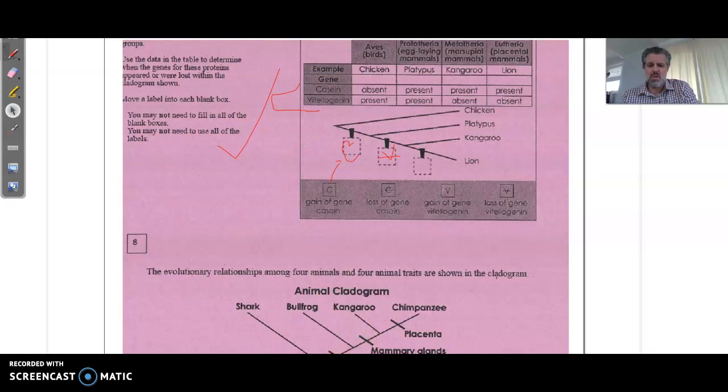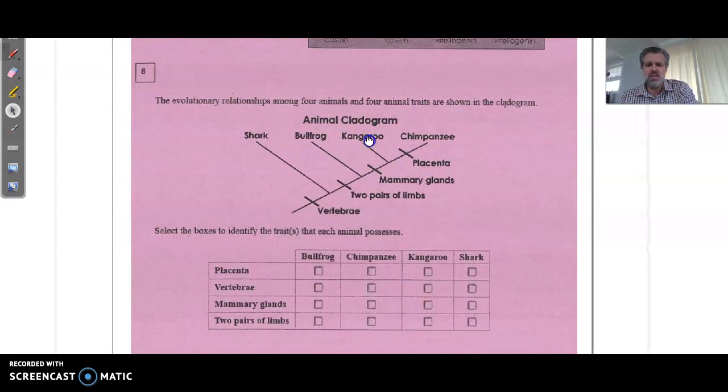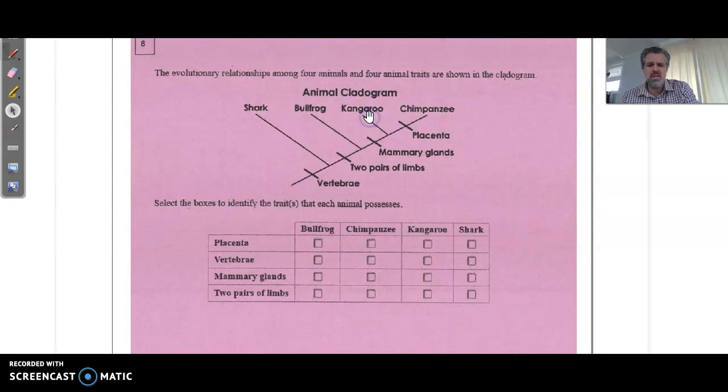All right, scrolling down to the animal cladogram there, looking at the evolutionary relationships among four animals and their traits. Select the boxes that identify the traits that each animal possesses. The frequently made issue and error here are the ones that people are checking the wrong boxes. This is what they actually possess. So you can do it a couple different ways - you can either do it by organism or you can do it by characteristic.